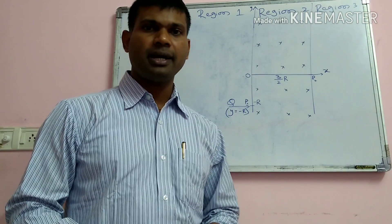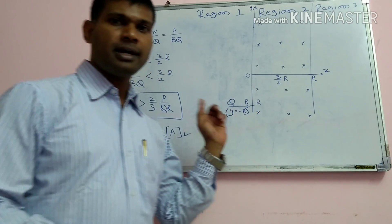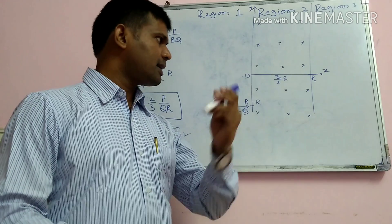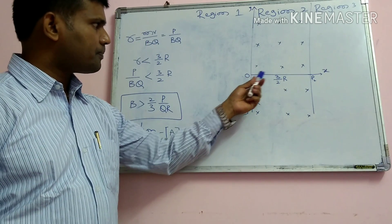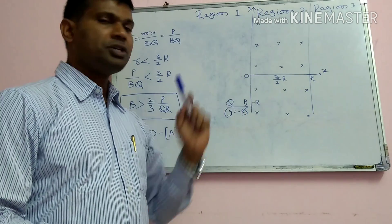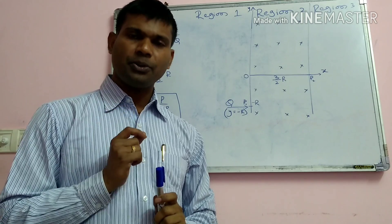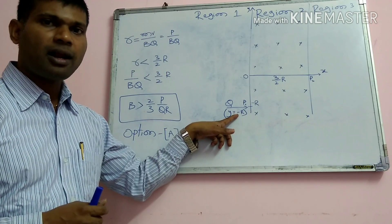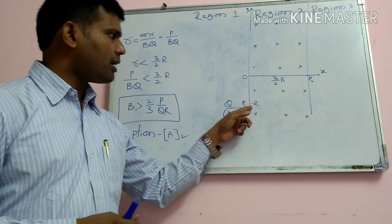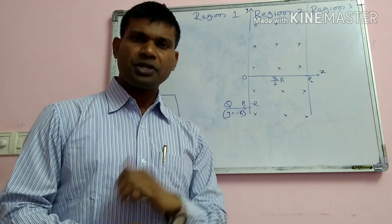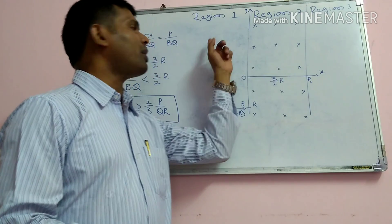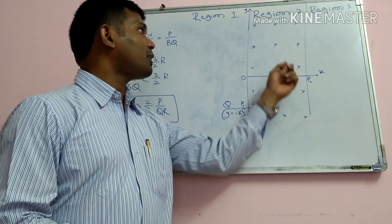We'll see the solution here. First, I will explain what information is given. Three regions are there: region 1, region 2, and region 3. In region 2, a magnetic field is directed into the board. The width of the magnetic field is 3/2 R. We'll choose a coordinate system with x-axis, y-axis, and origin. One charged particle of charge +Q enters at y = -R, perpendicular to the boundary. When the charged particle enters, it will undergo circular path. The question asks: what should be the value of magnetic field such that it will come back to region 1?